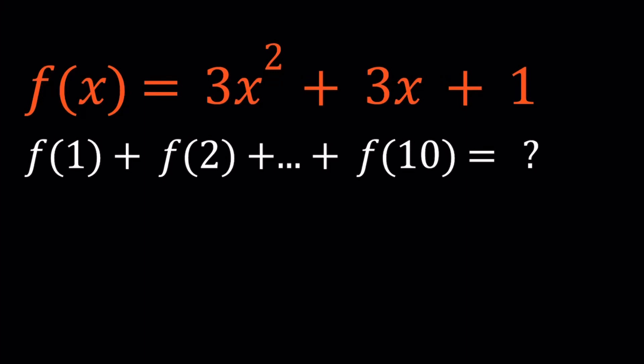Hello everyone. In this video we're going to be evaluating a function f(x) equals 3x squared plus 3x plus 1. And we're supposed to evaluate f of 1 plus f of 2 plus dot dot dot, so on and so forth, all the way up to f of 10. The three dots, called ellipsis, means that we have all the terms in between in the sum. Let's go ahead and get started with this task.